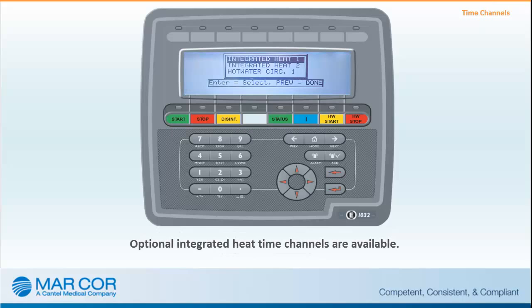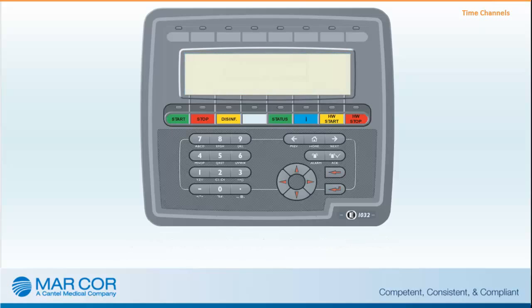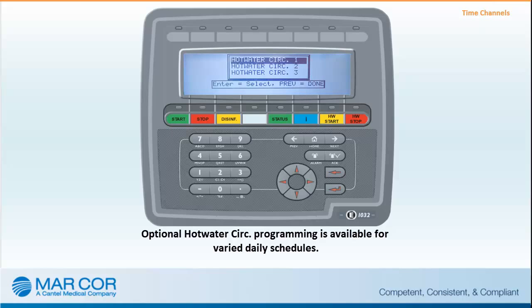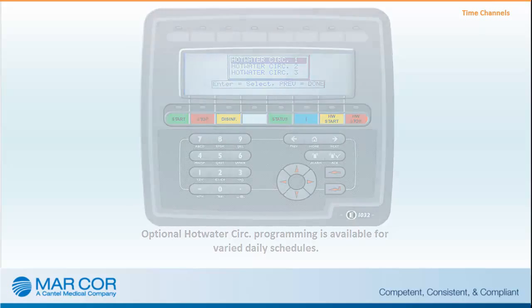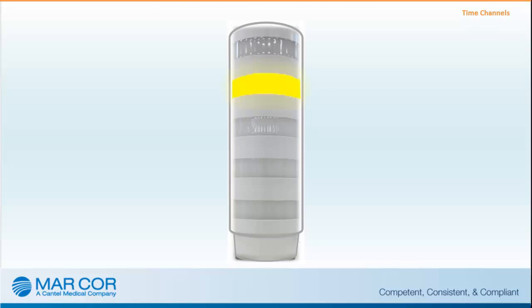Integrated heat controls the time set for different water loss values if using the CWP to disinfect dialysis machines' supply inlet lines. Hot water CIRC controls automatically the turning on and off of hot water circulation. The amount of time required for circulation depends on loop length, insulation, and ambient temperature. Typically, two hours is a sufficient amount of time for proper bacterial control. A blinking yellow light will be lit before hot water disinfection, and a steady yellow light will be lit during hot water disinfection. After hot water disinfection is completed, the CWP goes into standby or into operation depending on the time channel settings.